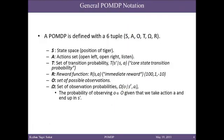A POMDP is defined with six variables. The first four are the same as a standard MDP. S denotes the state space, A denotes the action set, T denotes the set of transition probabilities, and R denotes the reward function, which depends on the state and action. Now we have a set of observations denoted by O, and a set of observation probabilities denoted by omega — the probability of observing O, given that we take action A and end up in state S prime. In the tiger problem, the state space is the position of the tiger. The action set is open left, open right, and listen.